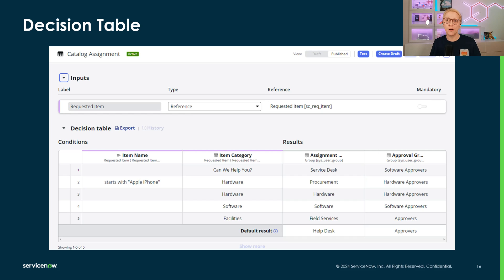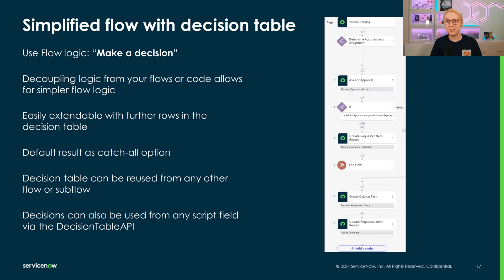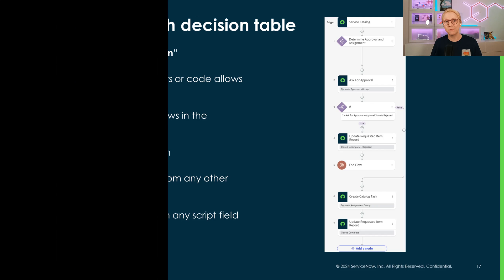The default result at the bottom allows you to always have a fallback answer if you add new catalog item categories that don't have a dedicated approval or assignment group yet. When we use decision tables, we can simplify the management of our fulfillment flow by a huge factor. With the make a decision logic, we can remove the complex if-then-else branching and instead use the outcome of the decision table for our approvals and assignment.